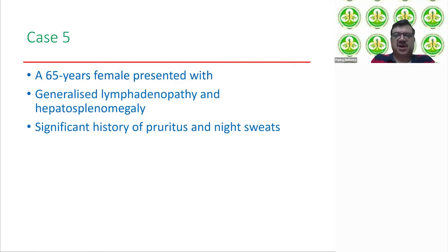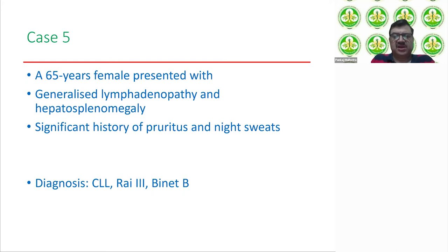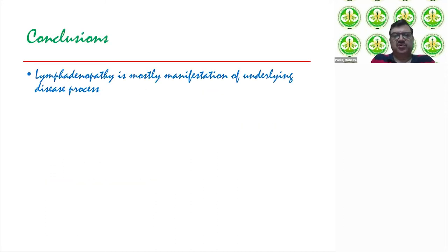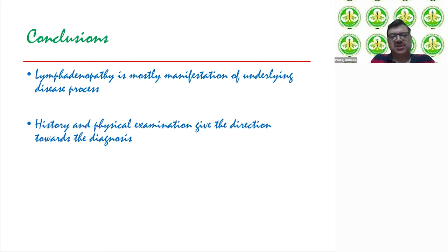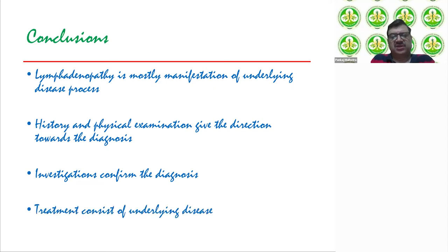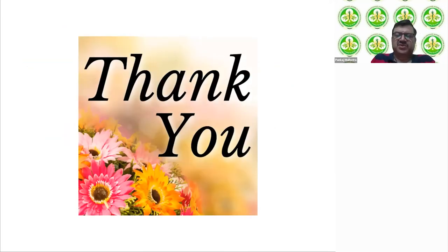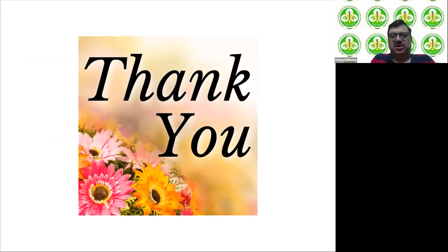The fifth case — the counts were very high and lymphocyte predominant — was CLL Rai stage 3 Binet B, as there was no thrombocytopenia. In conclusion: lymphadenopathy is mostly a manifestation of an underlying disease process. History and physical examination will give you the direction towards the diagnosis. Investigations are done to confirm the diagnosis, and treatment consists of treating the underlying disease. Thank you very much for your kind attention and I would be happy to take questions.